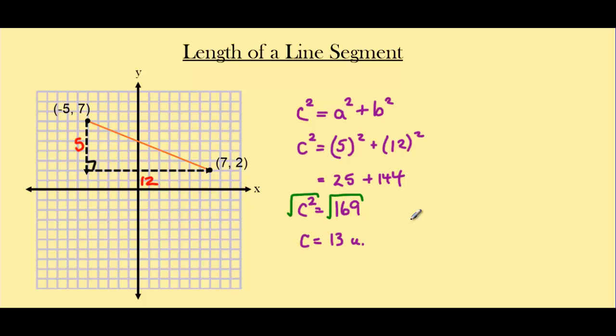And we end up with c equaling 13. 13 units exactly. And that is the length of that line segment from point one to point two.